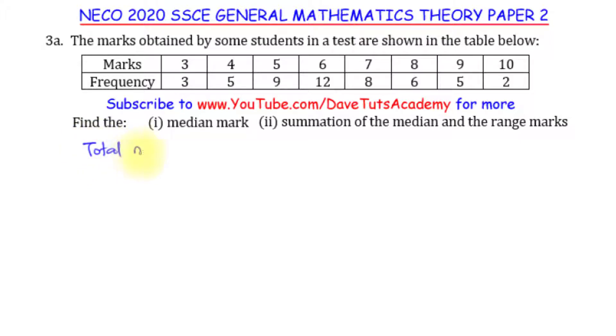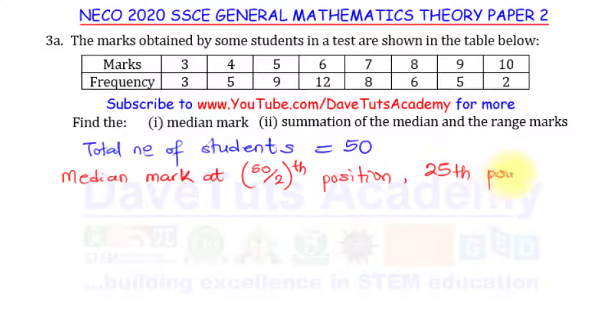We need to know the total so we can find the median mark, because the median mark will reflect at the 50 over 2 position. The median mark will be the mark at 50 over 2 position, and that is at the 25th point, because 50 over 2 is 25.